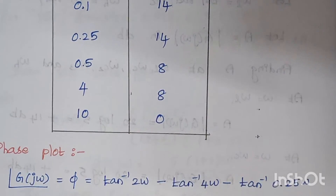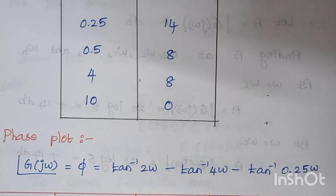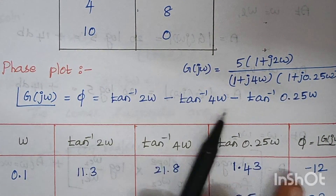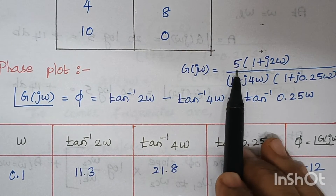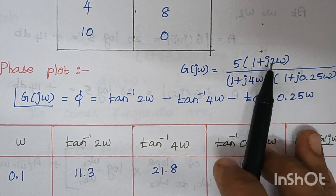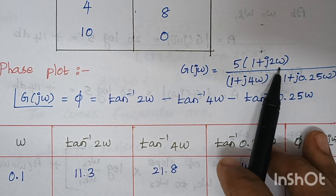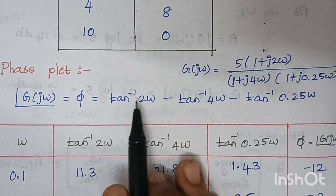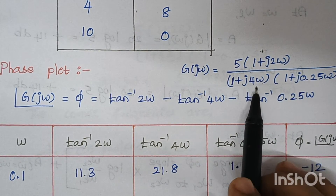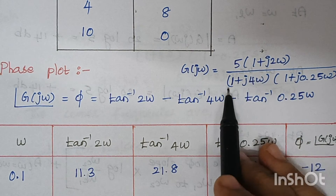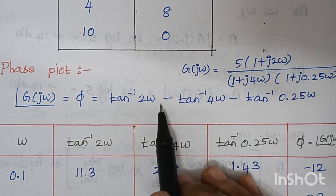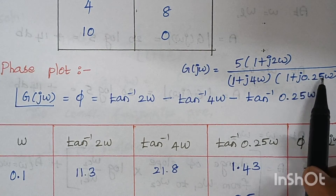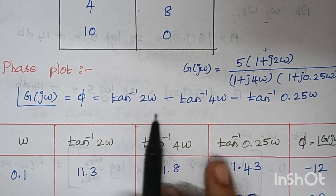Now we move to the phase plot. Looking at the problem, the constant term provides no angle. For the numerator term (1 + 2jω), the phase contribution is +tan⁻¹(2ω). For the denominator term (1 + 4jω), moving it to the numerator introduces a minus sign: −tan⁻¹(4ω). Similarly, the third term gives −tan⁻¹(0.25ω). This is the full expression for the phase angle.